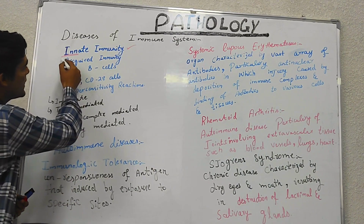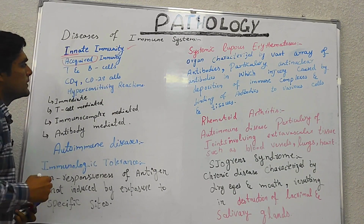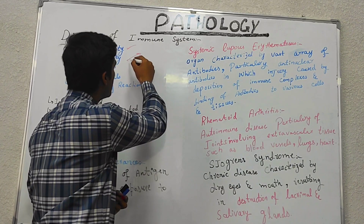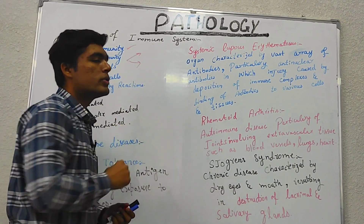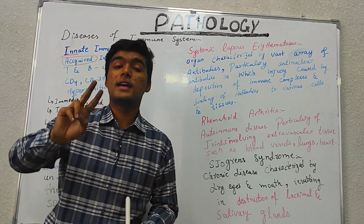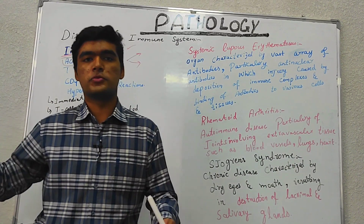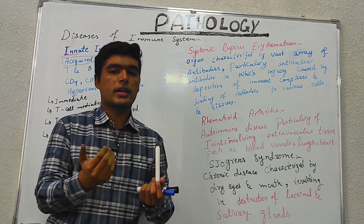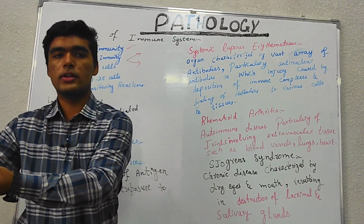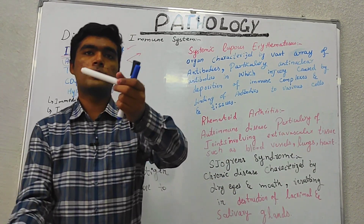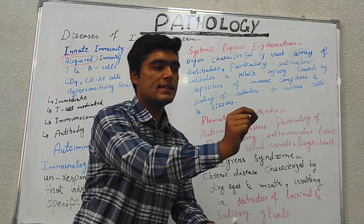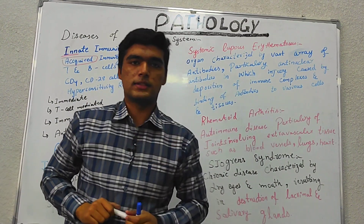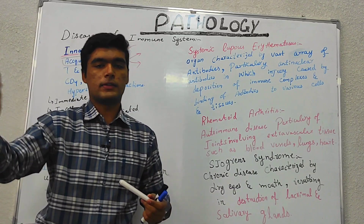We have a second type of immunity which is acquired. There are two forms of acquired immunity: one is humoral immune response and one is cell-mediated immune response. We can acquire antigens or antibodies to protect our body from disease pathogens that we are infected with.